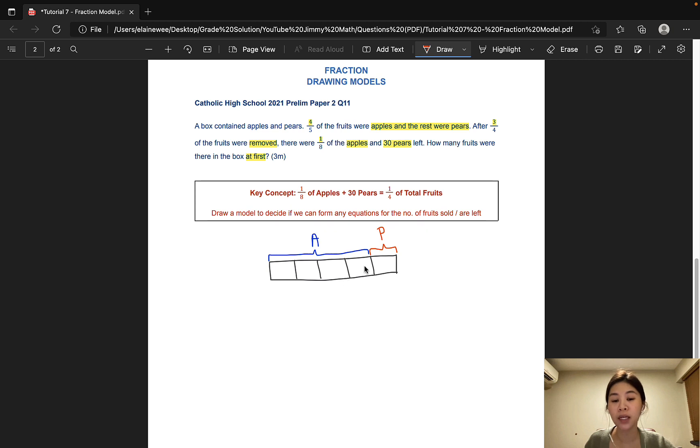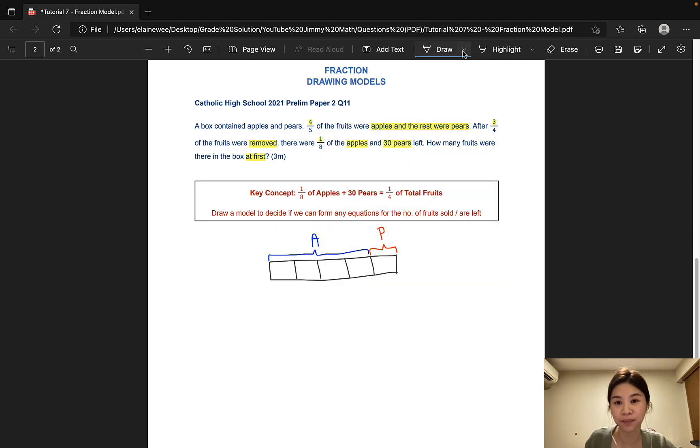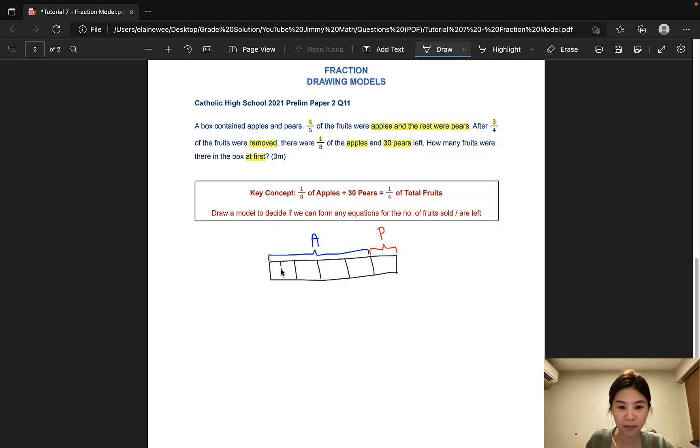There were four units of apples. However, one-eighth of the apples were left. In this case, we can't indicate one-eighth right away. Fortunately, four units can become eight units pretty easily. We simply have to split it into two groups. Now, to make sure that all the units are the same, we also have to do it for the unit representing the pears. So now we have 10 units in total.